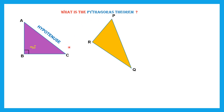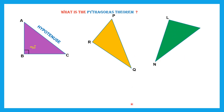Now let me give you another triangle. In this, which is the hypotenuse? Remember, the longest side is the hypotenuse. So PQ is the hypotenuse here. Another triangle — let's name this L, M and N. In this, which is the longest side? As you can see, the longest side is MN. So that is the hypotenuse. You should be able to identify the hypotenuse to help us use the Pythagoras Theorem.